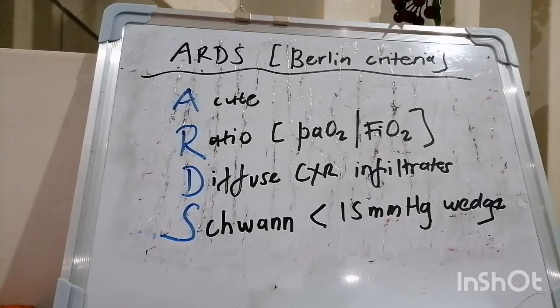So A, so this is the mnemonic that I came up with. A is acute onset, which means we have new or worsening respiratory symptoms within a week.